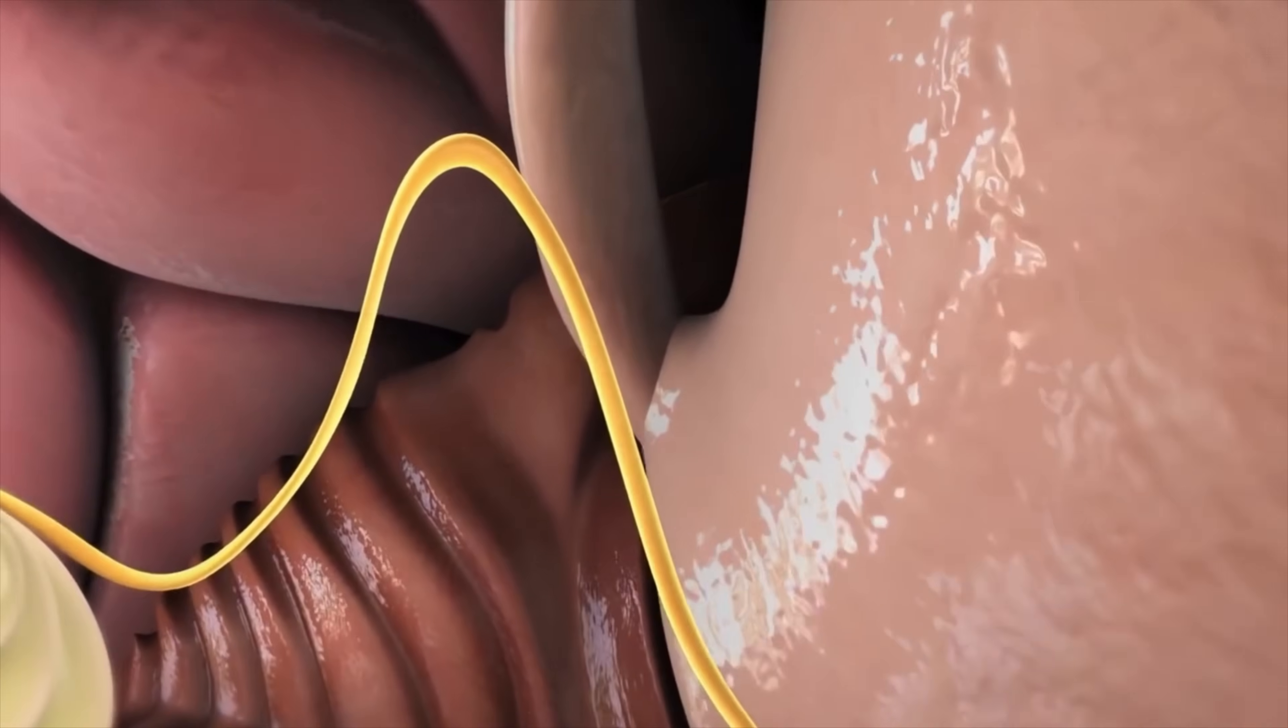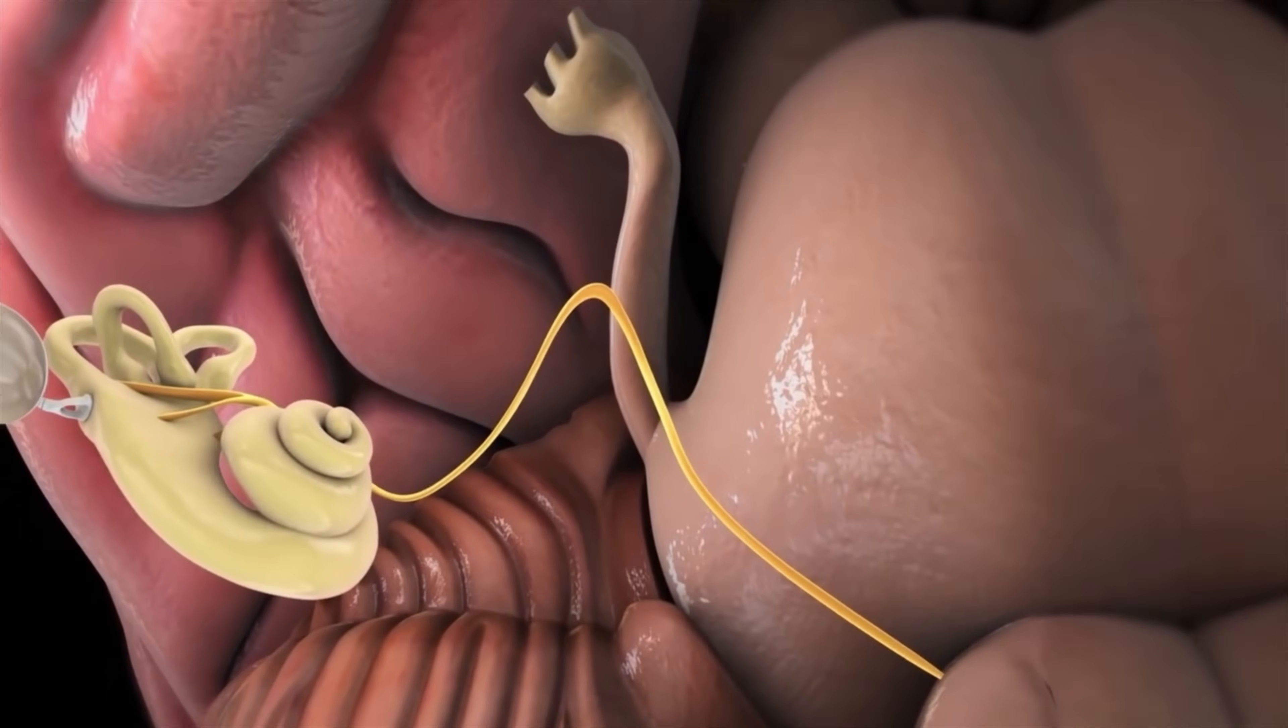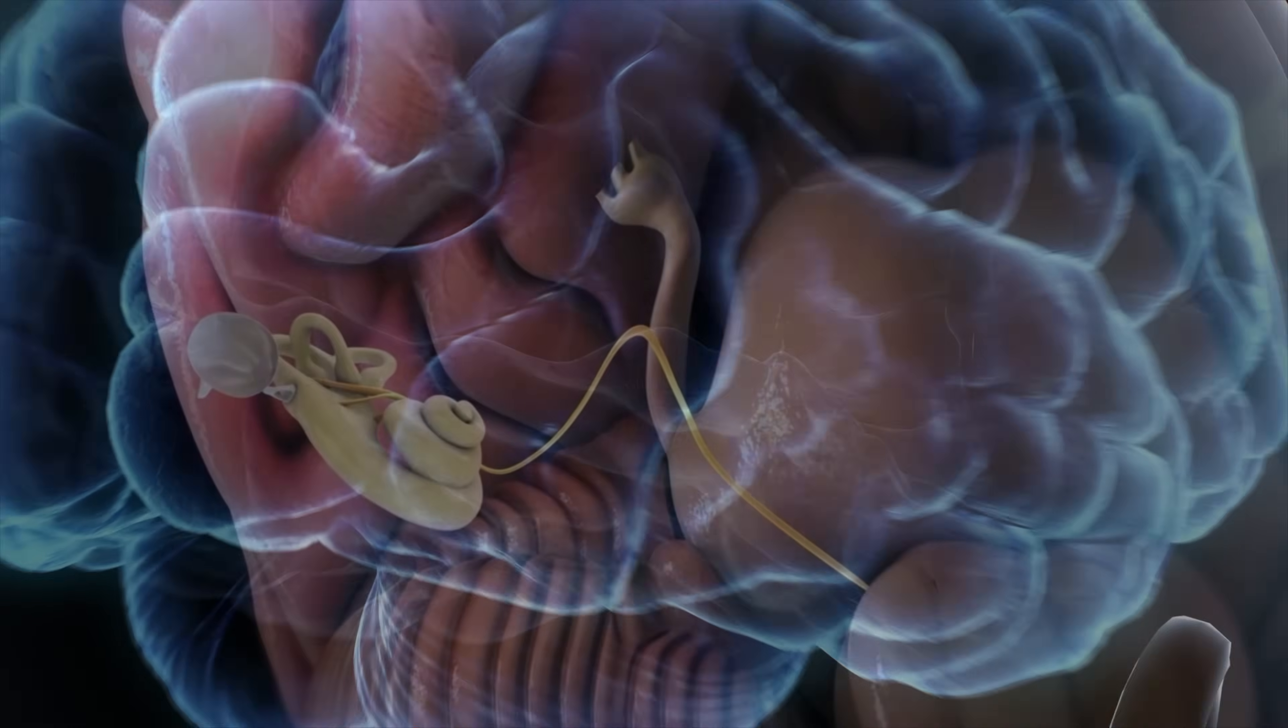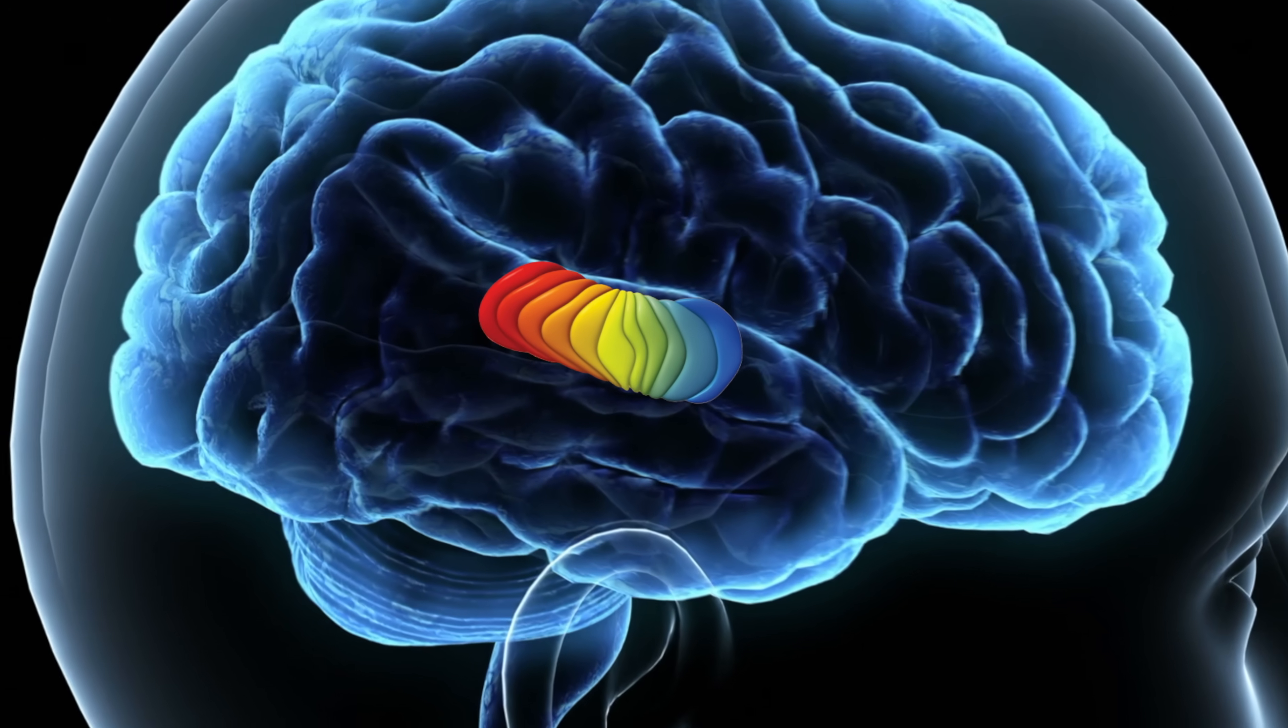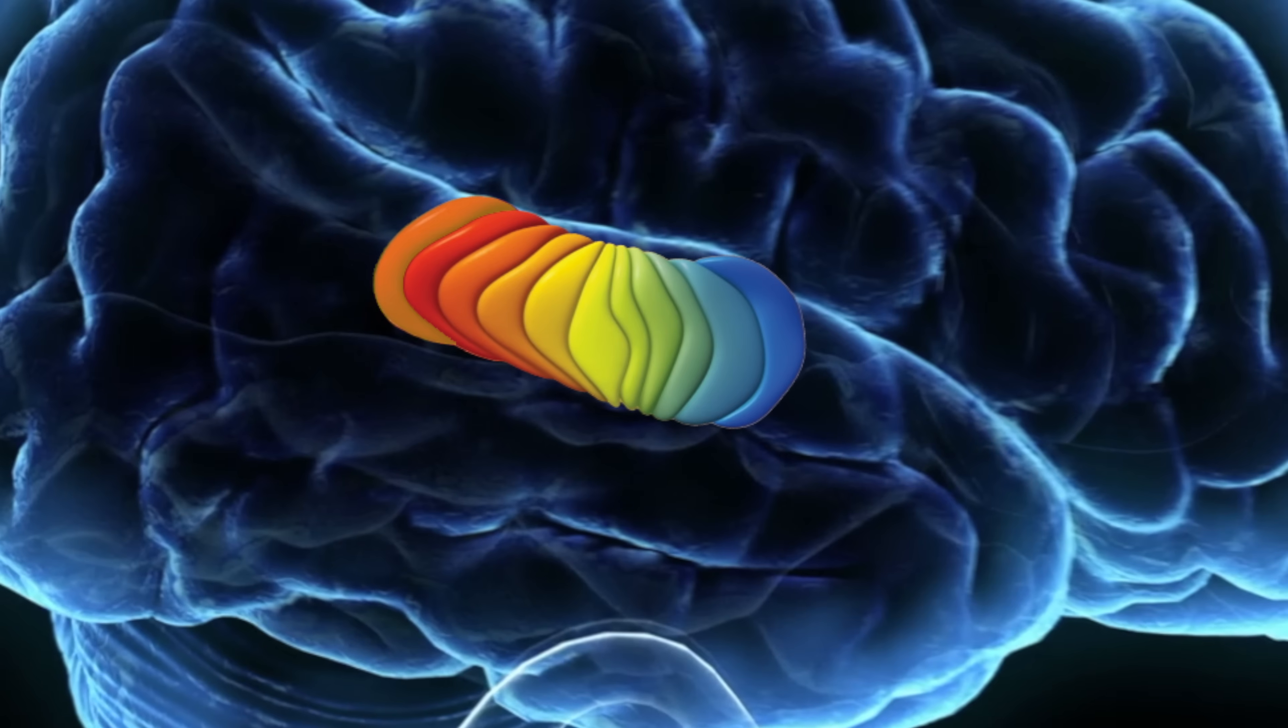Sound information in the brain is processed in a very specific brain area known as the auditory cortex. The auditory cortex is divided up into areas that are responsible for processing different pitches in a similar way to keys on a piano.